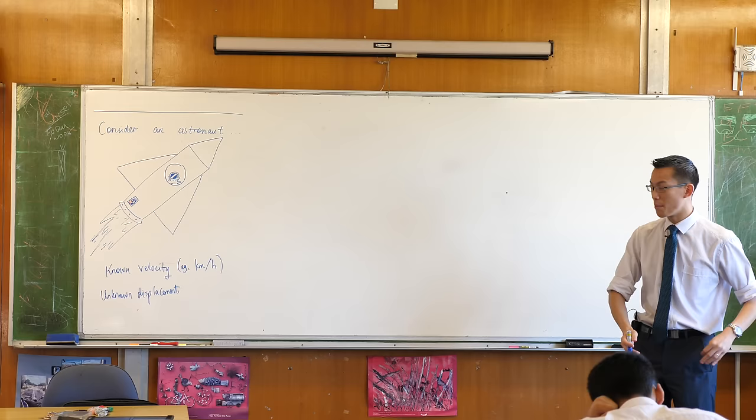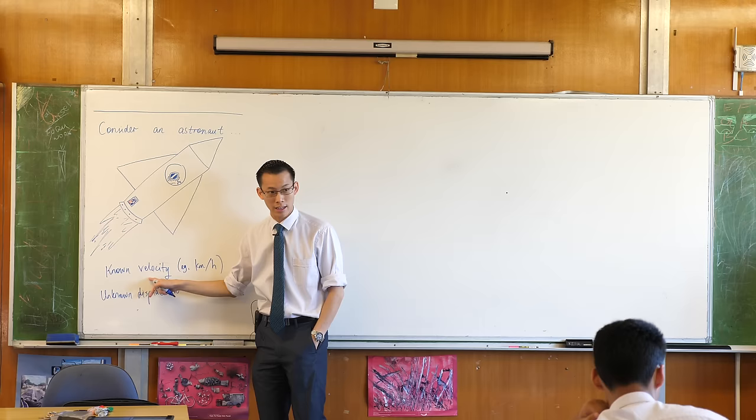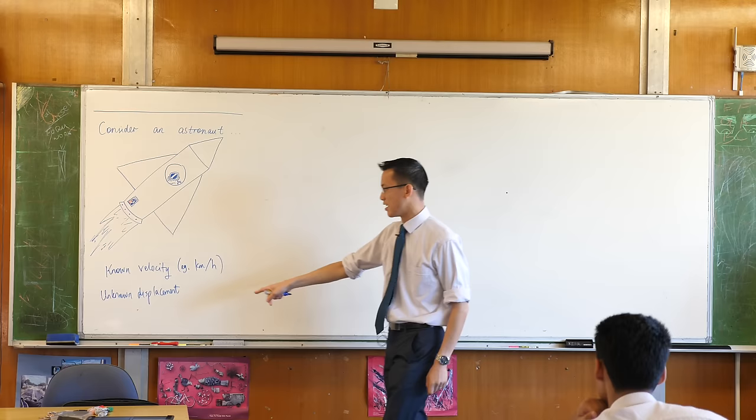That is a change in displacement or position compared to a change in time. For example, if I said 60 kilometers per hour as a velocity, that means that for every hour that I change, I change 60 kilometers in terms of distance. So this is kind of like a gradient. We know how to find velocity, we differentiate to find that.